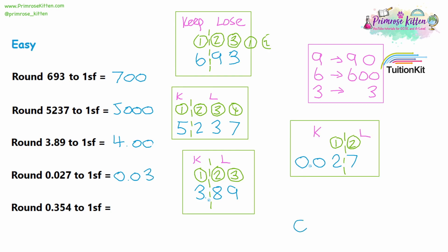For question five, we have 0.354. The first significant figure is the three — three tenths, which is the most important number. That's larger than the second significant figure, five hundredths, and the third, four thousandths. It's also larger than the zero units. So we start our first significant figure with the first non-zero number. We rule off after the first significant figure, giving us 0.3. The first number we're losing is a five, so we are going to round up. The answer is 0.4.